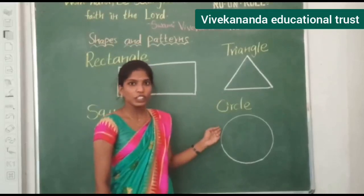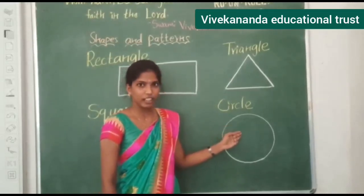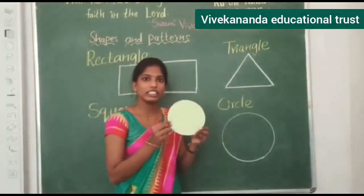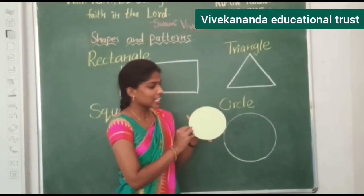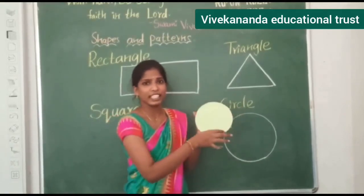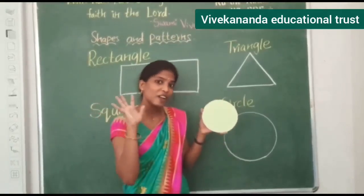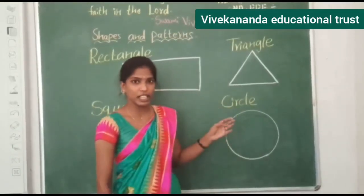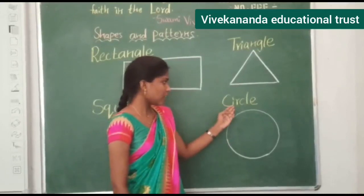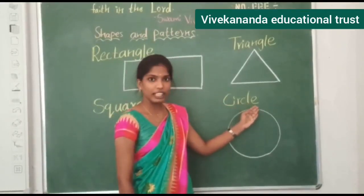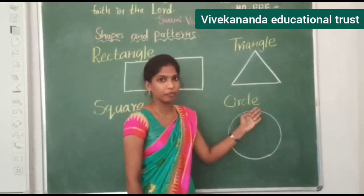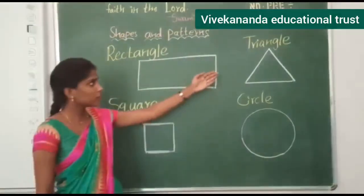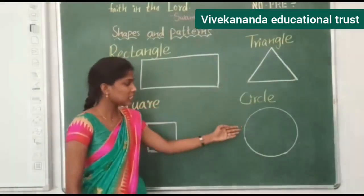Next, what shape is this? Circle. So this is the circle. It has no sides — circle has no sides. It is round. Can you spell the circle? C-I-R-C-L-E. Circle. Rectangle, square, triangle, circle.